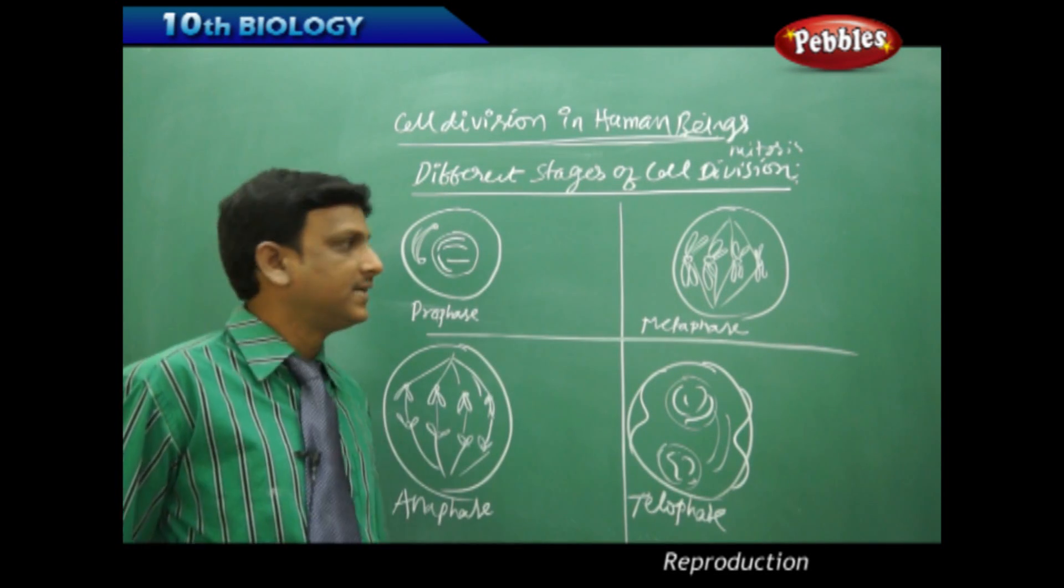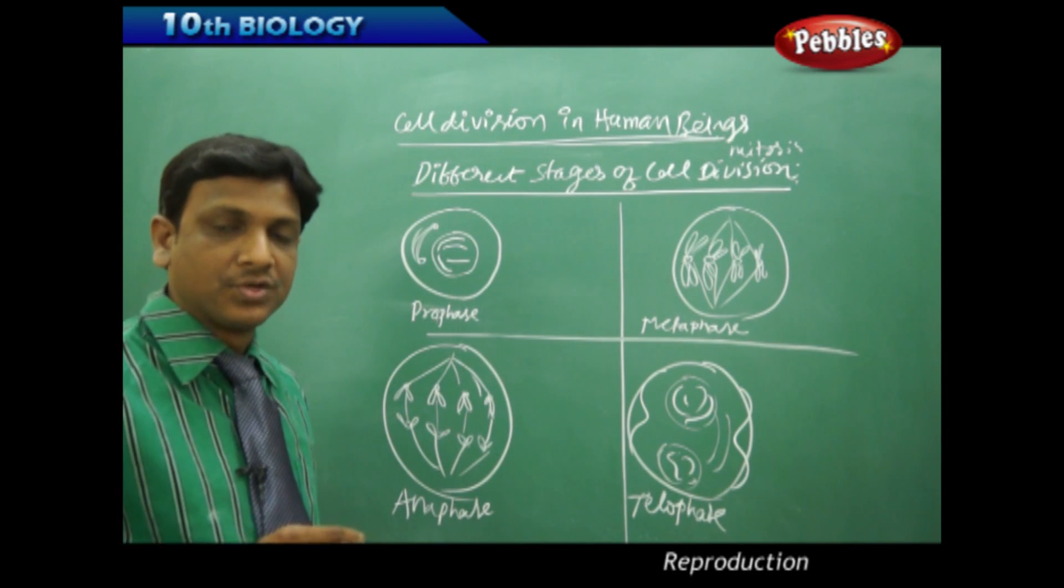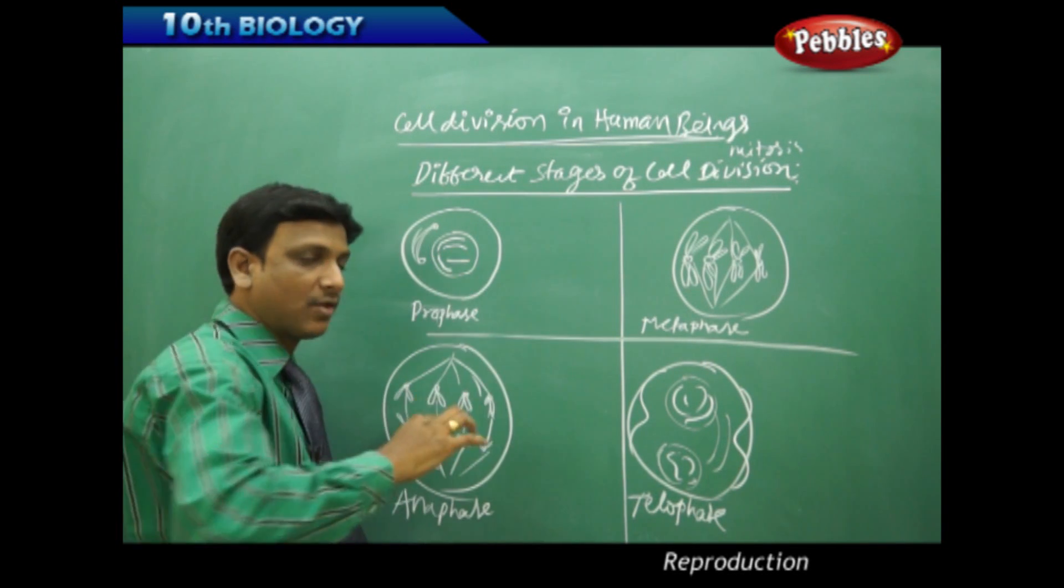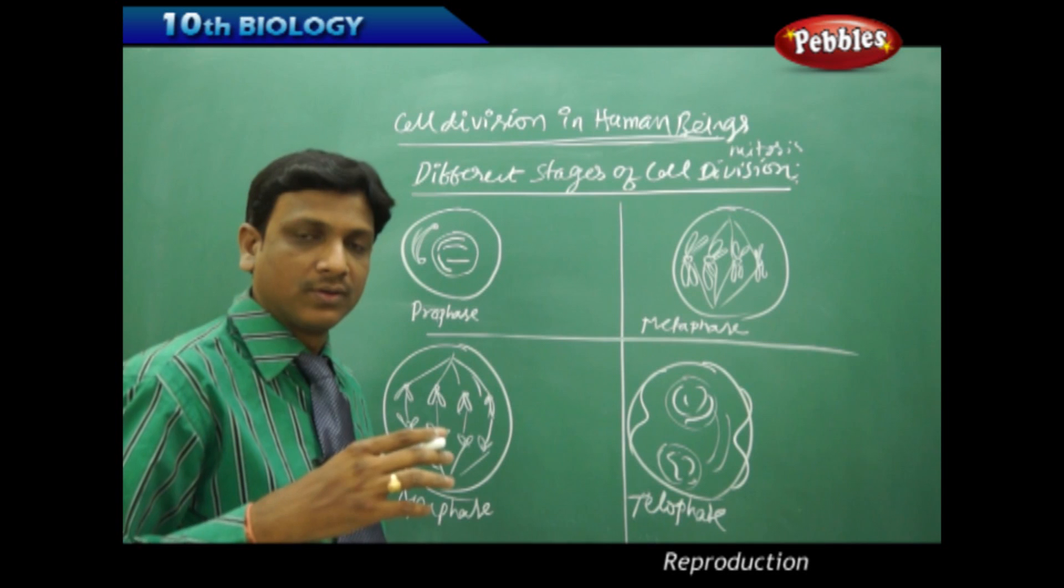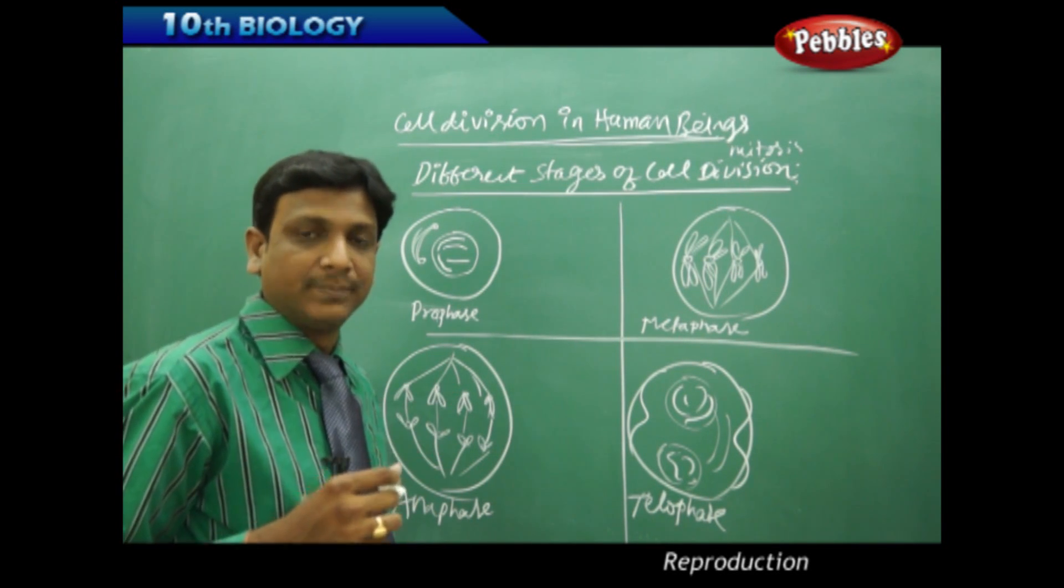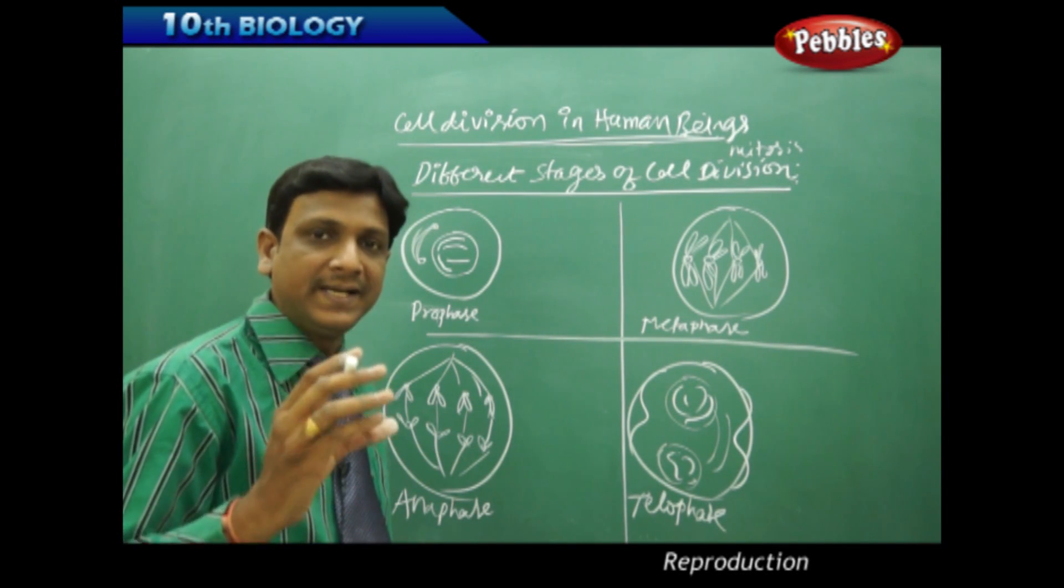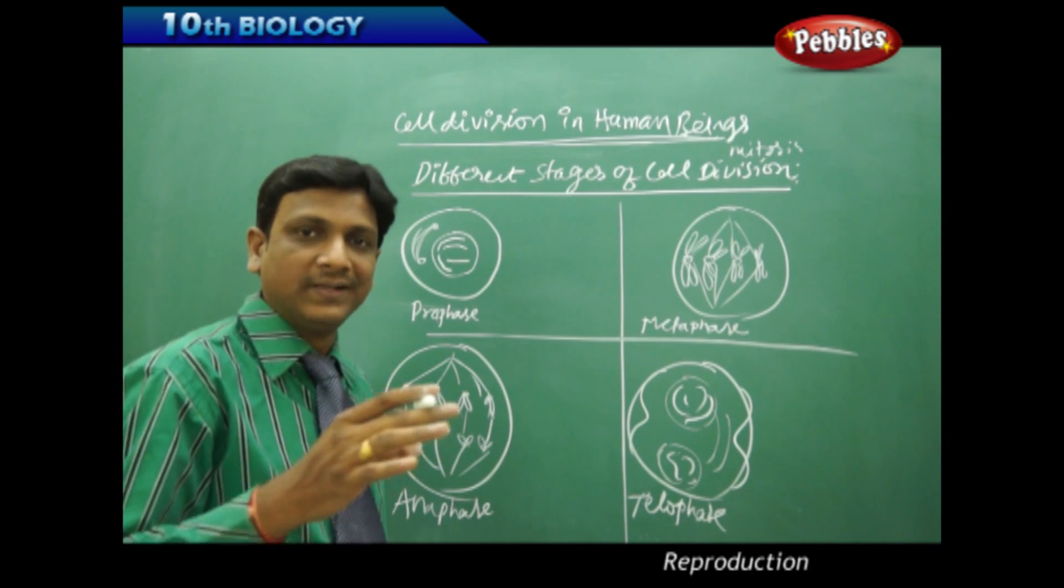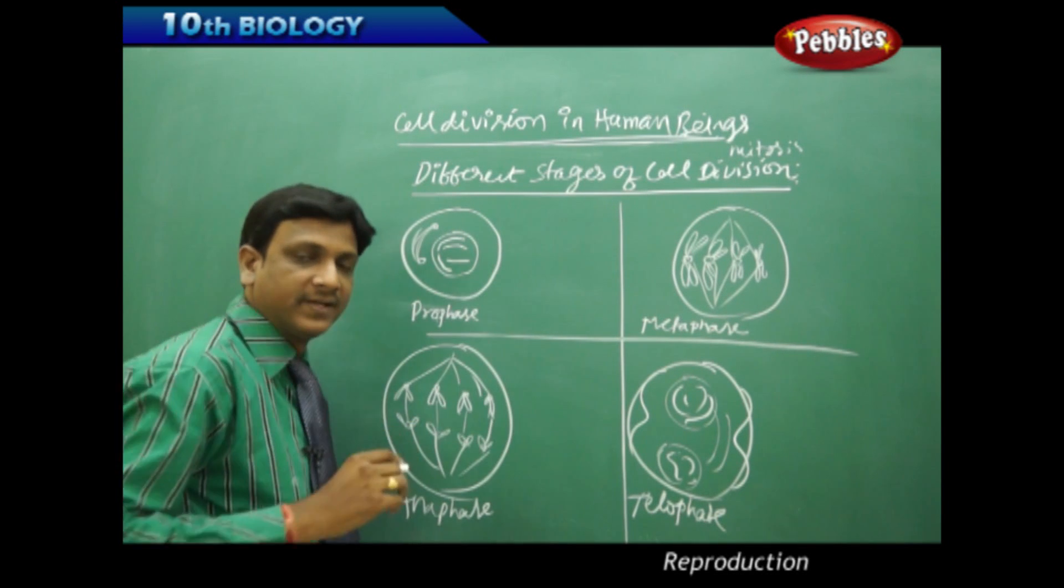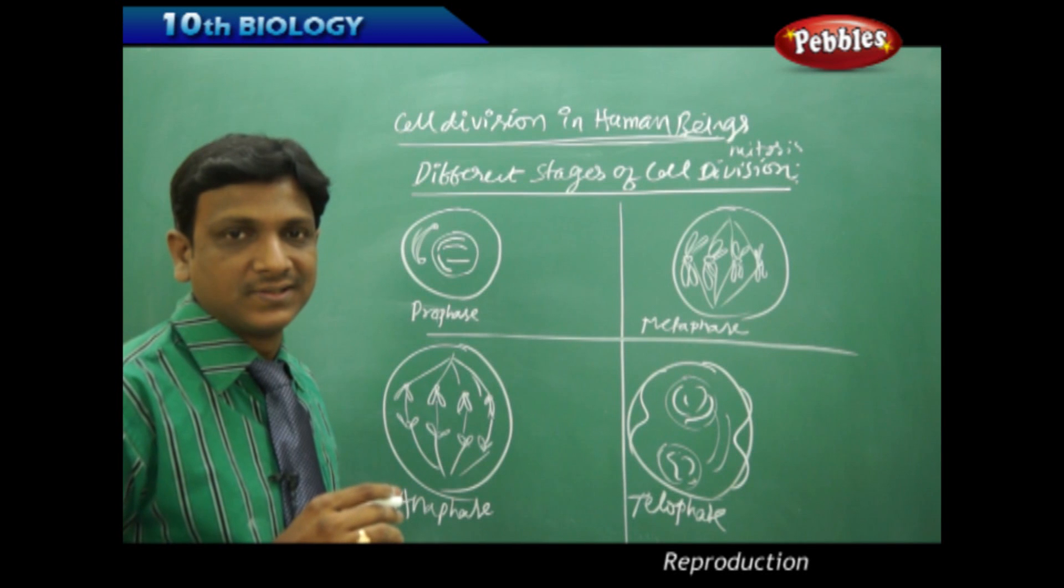Let us see the changes that take place in the first phase, prophase. When the cell is ready for cell division, the nuclear material, which is in the form of chromatin—if you think of an unwound thread from a bundle kept in a heap, like a ball—in such a way the chromatin becomes chromatids, that means it becomes into chromosomes.